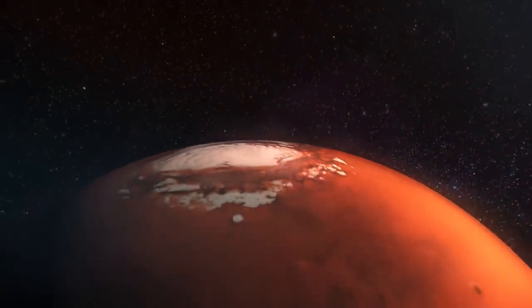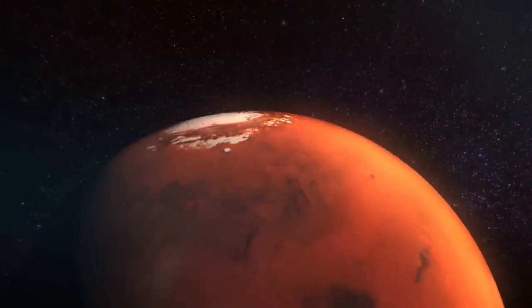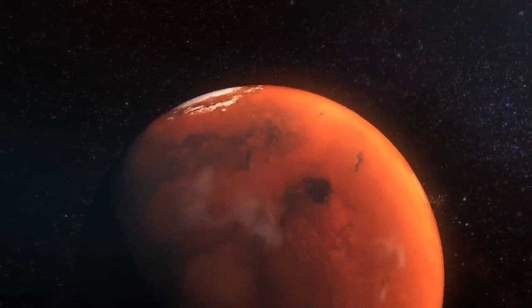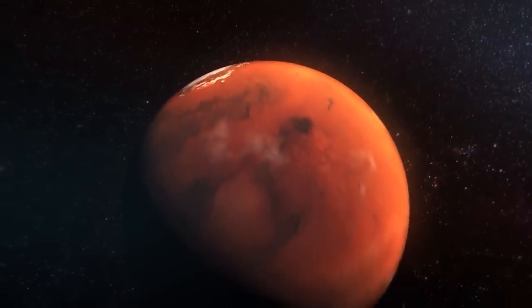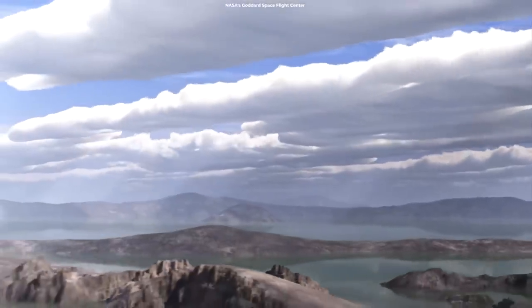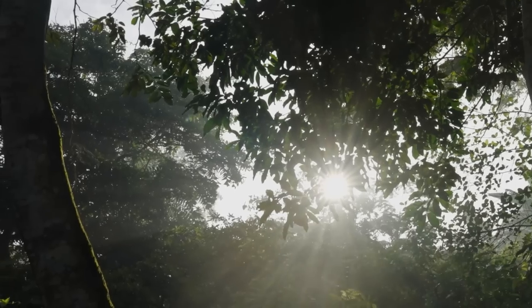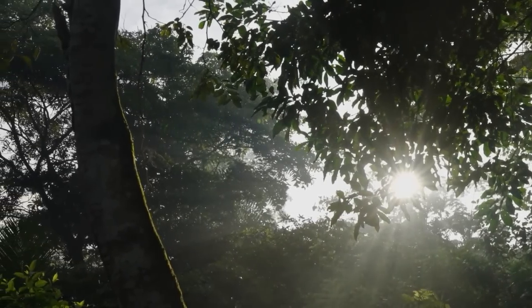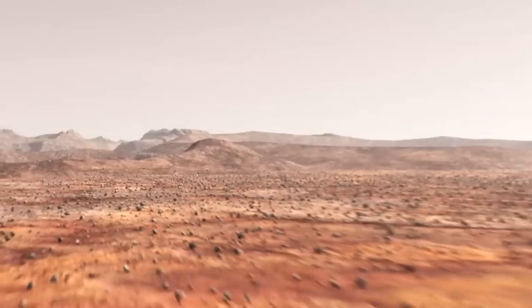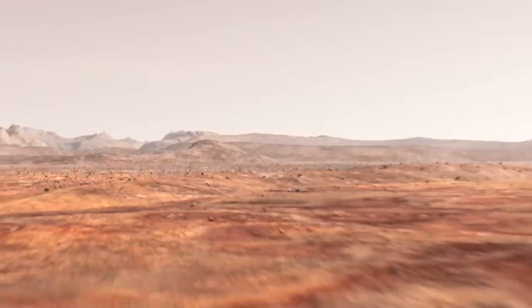Its rotation period and its size are quite similar to that of the Earth. Mars is indeed 1.9 times smaller than our planet. Scientists consider that 3.5 billion years ago, Mars would have had conditions favorable to the appearance and evolution of life.